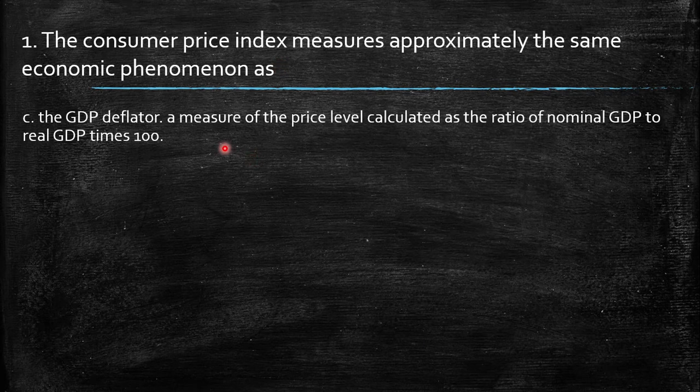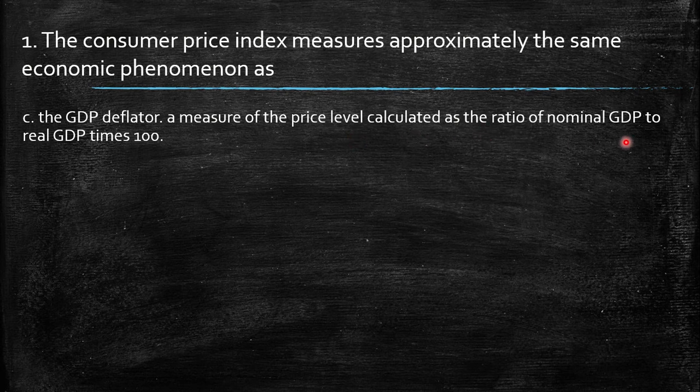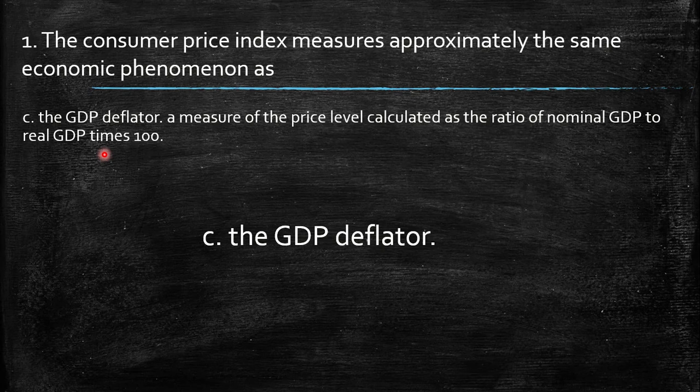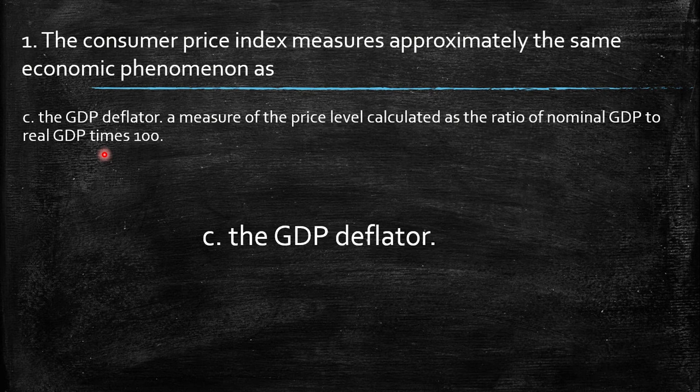So then the GDP deflator is, remember, the measure of price level calculated as the ratio of nominal GDP to real GDP times 100. So then the concept that is really similar to the consumer price index is the GDP deflator.